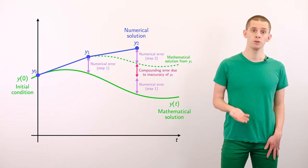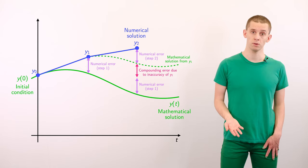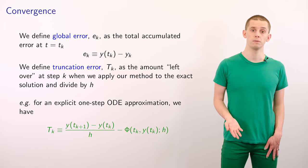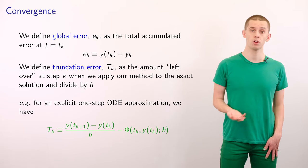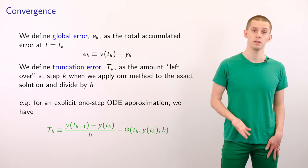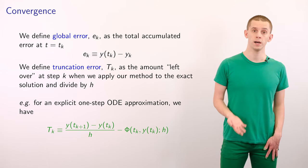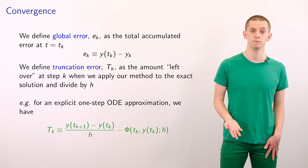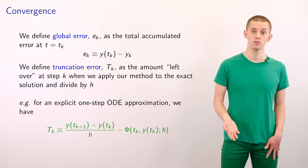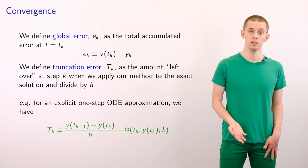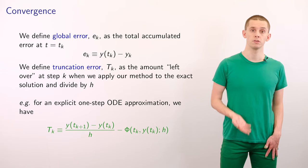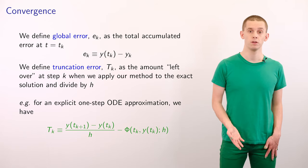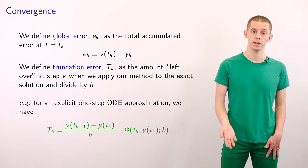We'll now introduce several definitions that can help us unravel these effects. We define the global error e_k to be the total accumulated error at t equal to t_k. So e_k is equal to y evaluated at t_k minus y_k. We'll also define the truncation error, capital T subscript k, which is the amount left over at step k when we apply our numerical method to the exact solution and divide by h.